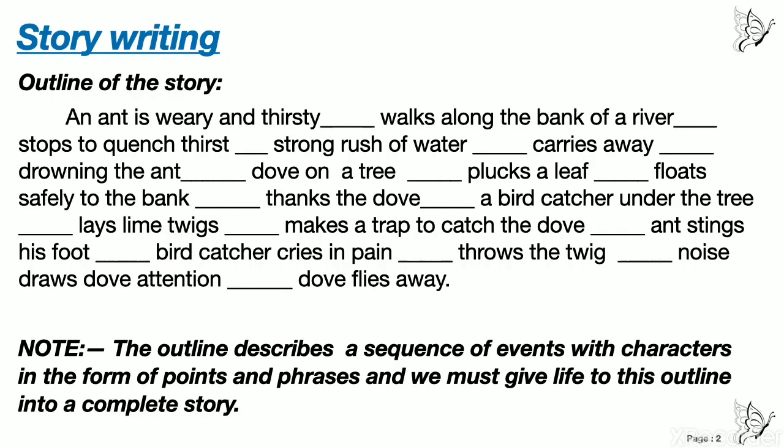Now, these dashes — don't think that you are just going to put one word for each. If you put one word, then you will get zero. Note: the outline describes a sequence of events with characters in the form of points and phrases. We must give life to this outline into a complete story. This outline just tells you what is happening one after another.